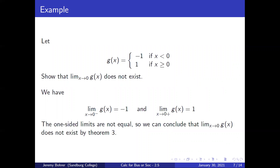Now let g(x) equal negative 1 if x is less than 0, and 1 if x is greater than or equal to 0, and show that the limit as x approaches 0 of g(x) does not exist. We have the limit as x approaches 0 from below of g(x) equals negative 1, and the limit as x approaches 0 from above of g(x) equals 1. The one-sided limits are not equal, so we can conclude that the limit as x approaches 0 of g(x) does not exist, by Theorem 3.